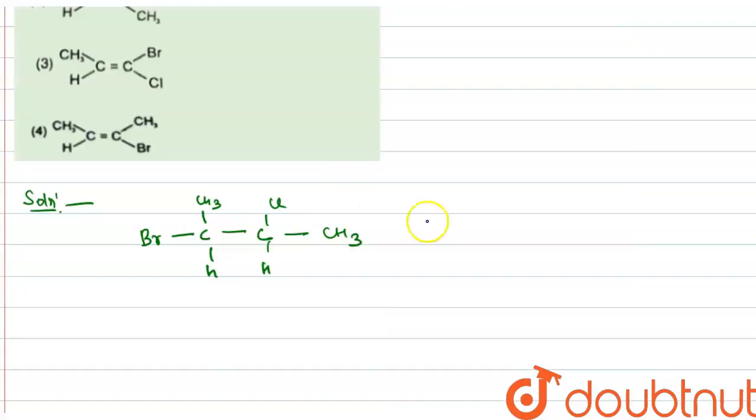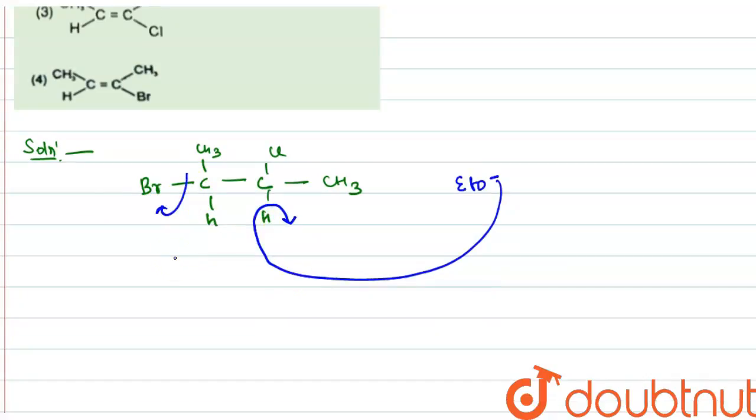This compound reacts with ETO minus. In Br and Cl, Br is a good leaving group, therefore ETO minus extracts this hydrogen and Br minus removes from the compound.